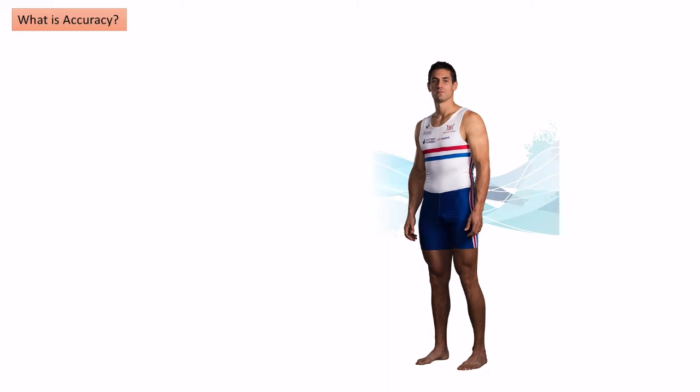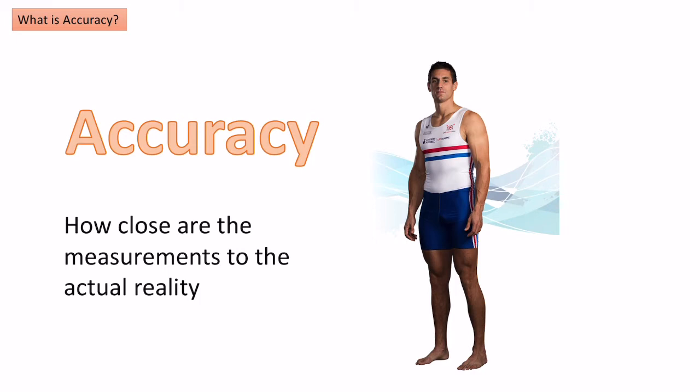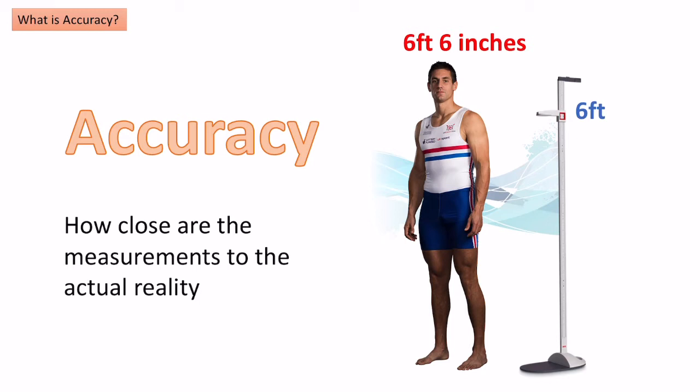The first term we look at is accuracy. Accuracy is about making sure that the measurements we take actually reflect reality. So if I was measuring the height of this Olympic rower and I measured it and said I thought it was six foot, we can see to the naked eye that this person is obviously over six foot. They're actually six foot six inches, so the measurement I've taken doesn't reflect the actual reality.